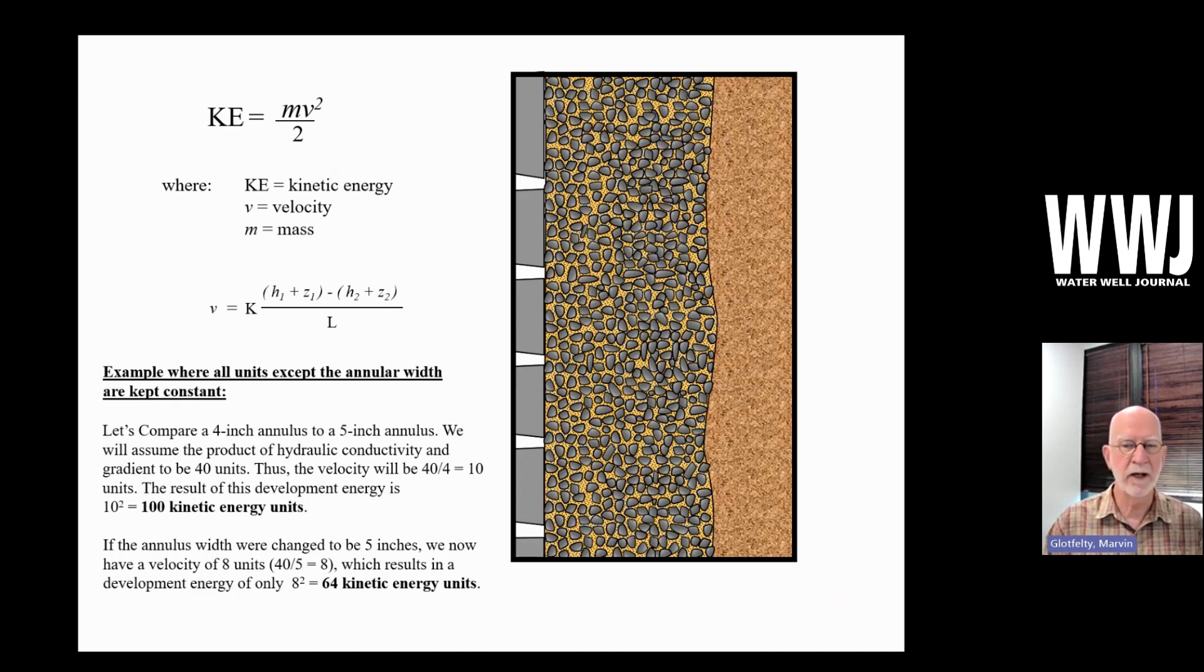Is that to say that we need to go really tiny on the annulus widths? No, it's not to say that because we don't want to have sand invasion, we need to have room for tremie pipes and other angular tubing goods and things like that. So it depends on the overall well design. But this is just something not to ignore, something to keep in mind.